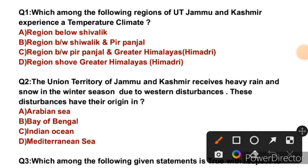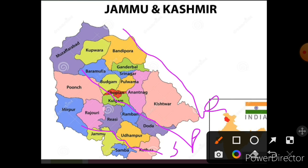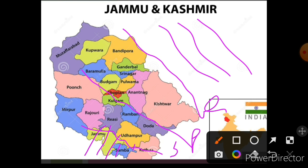Question 1: Which among the following regions of UT Jammu and Kashmir experiences a temperate climate? To understand this, let's look at the map. Jammu and Kashmir UT has several mountain ranges: Shivalik, then Pir Panjal, then Greater Himalayas, and beyond that the trans-Himalayan ranges — Zanskar, Ladakh, and Karakoram. The area below Shivalik is called Jammu Plains, and its climate resembles that of northern India — that is, tropical monsoon climate.